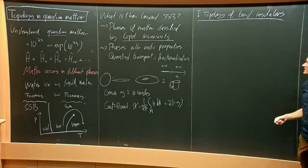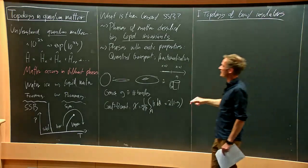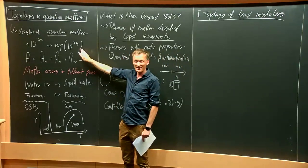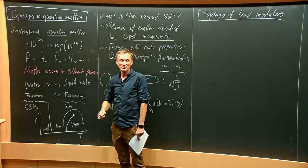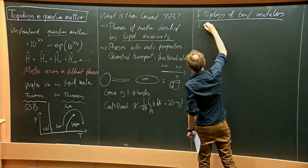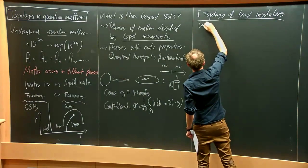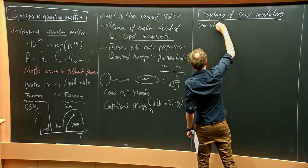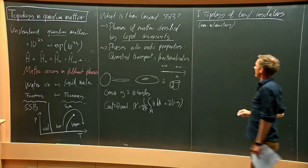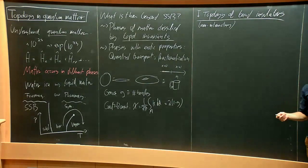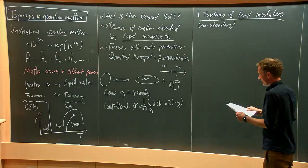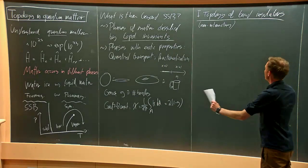The neat thing here is that, as I pointed out, we usually have to deal with very complicated many-body problems. But the moment we reduce to band insulators, we forget about interactions for now — we look at non-interacting particles. In this case, we get away by just looking at a single-particle wave function, which is much easier. It turns out that if we just look at these simple band structures, we can define topological invariants that distinguish different types of insulators with surprising properties.